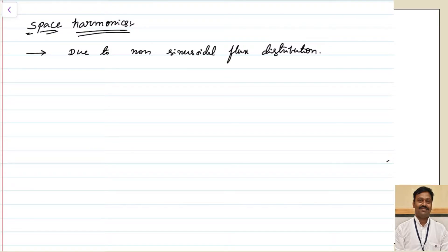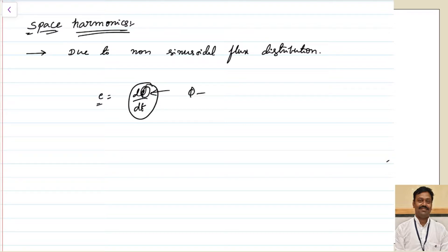The space harmonics happen mainly due to the non-sinusoidal flux distribution. We know that the EMF induced depends on the shape of the waveform or the shape of the flux. We know the EMF induced E is equal to dφ/dt. So this dφ/dt — the shape of the flux decides the shape of the EMF that is produced. If flux is sinusoidal then automatically your EMF will also be sinusoidal. If flux is non-sinusoidal, the differentiation changes the waveform and you will produce a different kind of EMF. That is why we always want the flux to be sinusoidal.